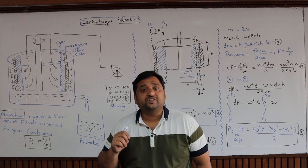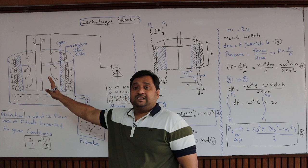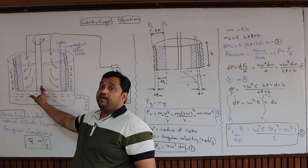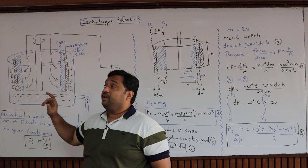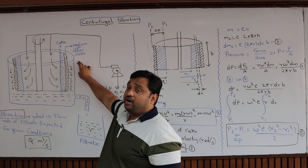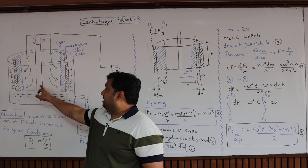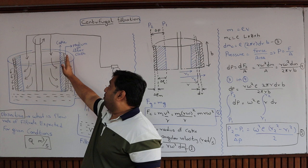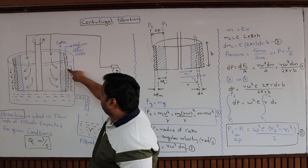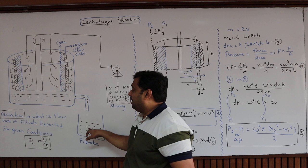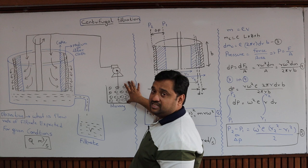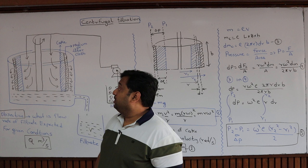This is what a typical centrifuge looks like on the board. The central rod, which is connected to the rotating frame, drives the inner cylinder. You can see two circles: the outer circle holds the inner cylinder, which rotates at high RPM. The cake is deposited around the corners of the inner cylinder, solids are separated, and clean liquid comes out and is collected in a collecting vessel.